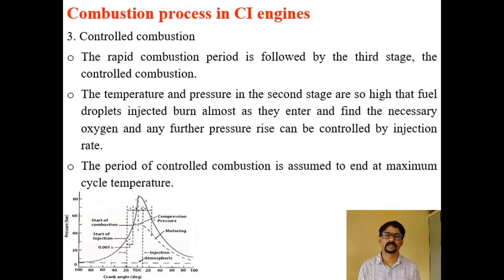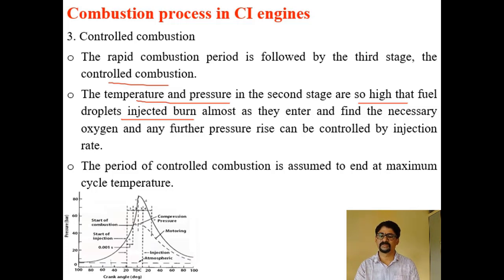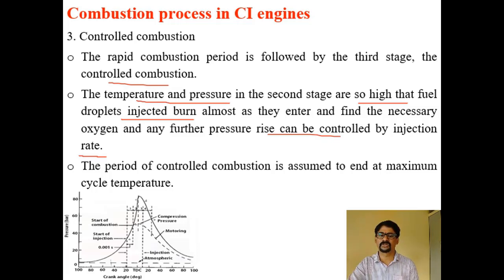The controlled combustion phase follows uncontrolled combustion. The temperature and pressure rise in the uncontrolled phase are so high that fuel droplets injected subsequently burn almost completely as they enter and find the necessary oxygen. Any further rise in pressure can be controlled by the injection rate. Once the uncontrolled phase begins, combustion can be controlled by controlling the injection rate. The period of controlled combustion is assumed to end at the maximum cycle temperature.